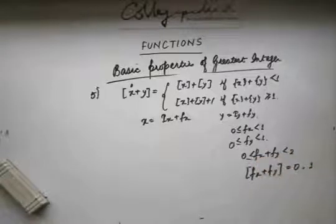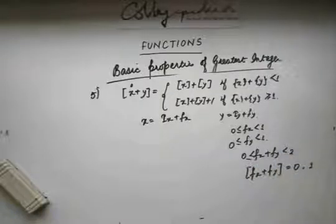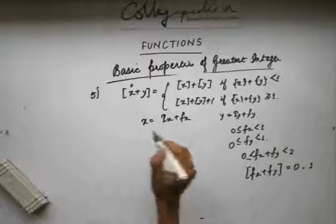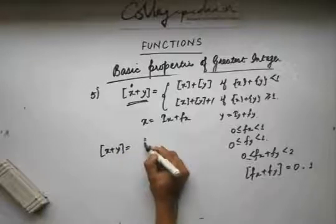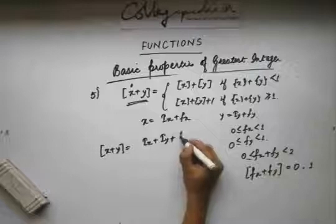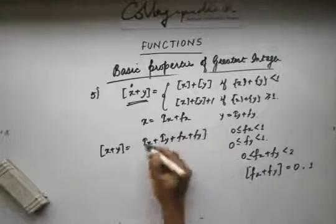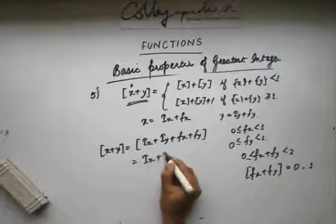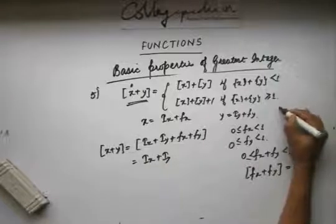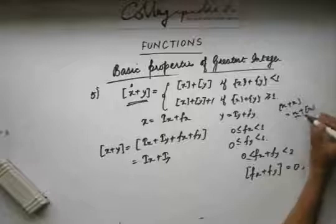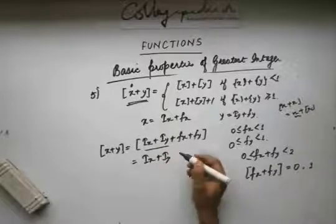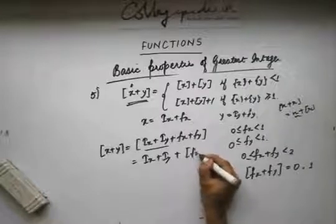If fx plus fy lies between 0 and 1, then ⌊fx+fy⌋ is 0. If fx plus fy lies between 1 and 2, then ⌊fx+fy⌋ is 1. Now, ⌊x+y⌋ equals ⌊ix + iy + fx + fy⌋. We can take out ix plus iy — since we saw in the second or third property that ⌊n+x⌋ = n + ⌊x⌋ when n is an integer — and since ix plus iy is an integer, we take it out and are left with ⌊fx+fy⌋.